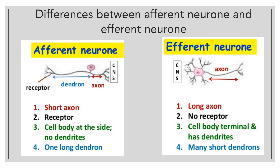The differences between afferent neuron and efferent neuron. First, afferent neuron has a short axon, whereas efferent neuron has a long axon. Second, afferent neuron has a receptor, whereas efferent neuron does not have a receptor. Third, afferent neuron has its cell body at the side with no dendrites, whereas efferent neuron has its cell body located at the terminal and has dendrites. And the last difference is that afferent neuron has one long dendron, whereas efferent neuron has many short dendrons.